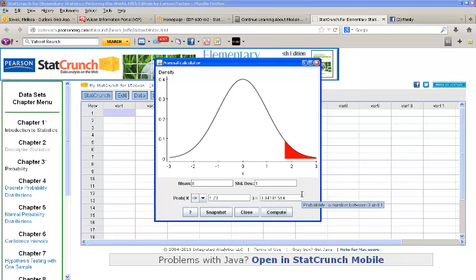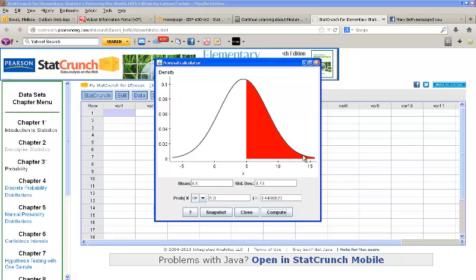Now, if you are working with a distribution that's normally distributed with a different mean and standard deviation, so a non-standard normal distribution, all you'd have to do is type in the mean. So we used the example before: the mean was 4.5 and the standard deviation was 3.73. And let's say now we want to find the probability of being greater than 5.0. We'll click Compute. It'll draw a normal distribution with these particular mean and standard deviations, and then it will give us the value for the probability here. So 0.4466822.